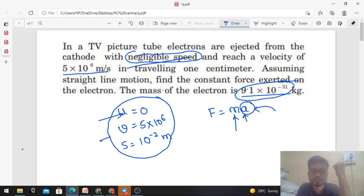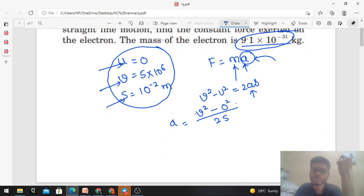To find acceleration, we have initial velocity, final velocity, and displacement. Which equation? v² - u² = 2as. This equation can easily give you the value of acceleration. Since initial velocity is zero, acceleration a = v²/2s. So we'll substitute a = v²/2s into our force equation.